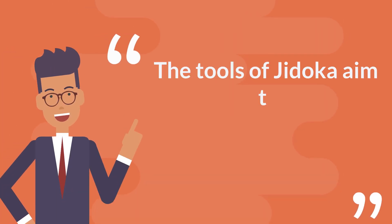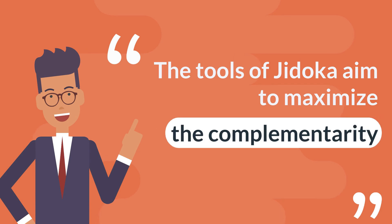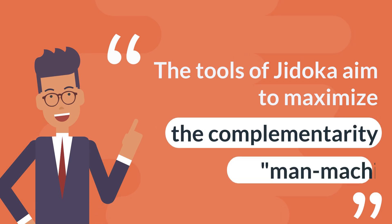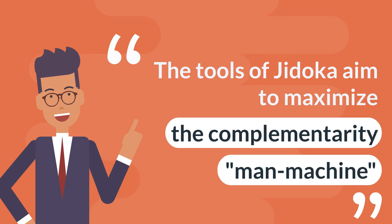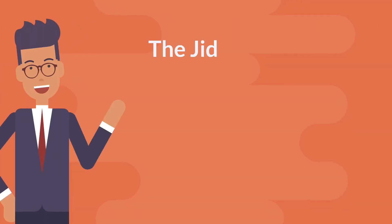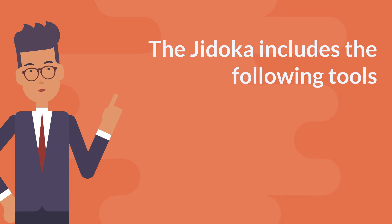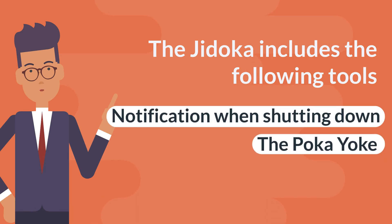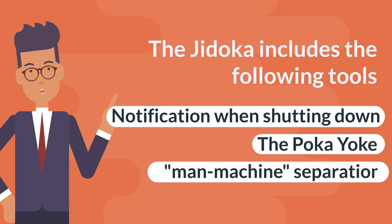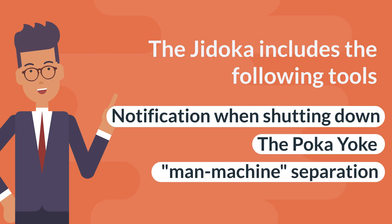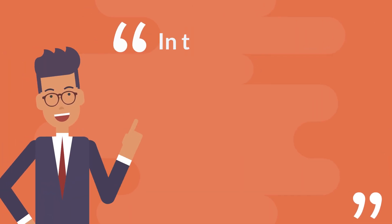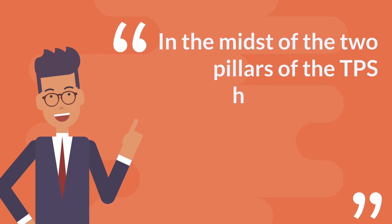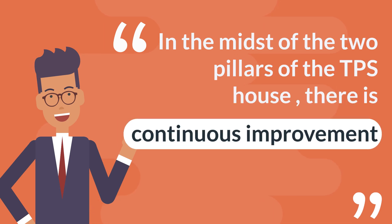The tools of Jidoka aim to maximize the complementarity between man and machine. Jidoka includes the following tools: notification when shutdown, poka-yoke, and man-machine separation. In the midst of the two pillars of the TPS House there is continuous improvement and the hunt for waste.